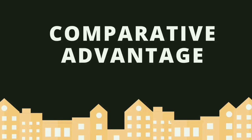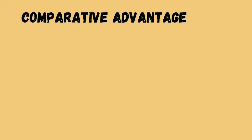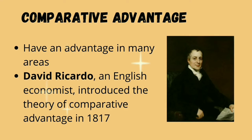The theory of comparative advantage challenged absolute advantage by noting that some countries may be better at producing both goods and therefore have an advantage in many areas, while another country may not have any useful absolute advantages. To answer this challenge, David Ricardo, an English economist, introduced the theory of comparative advantage in 1817. These remain relatively new and minimally tested theories.